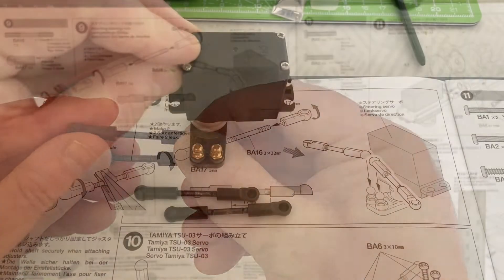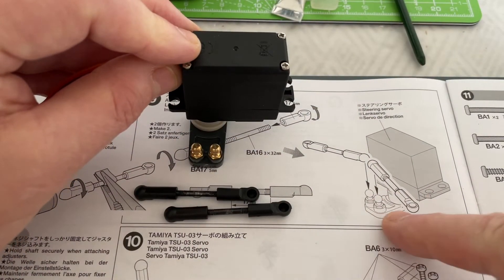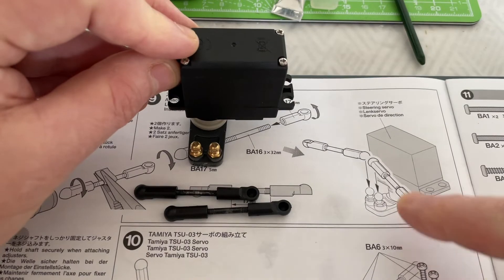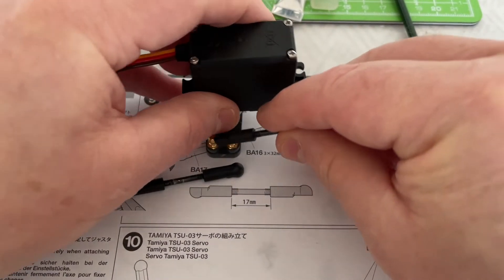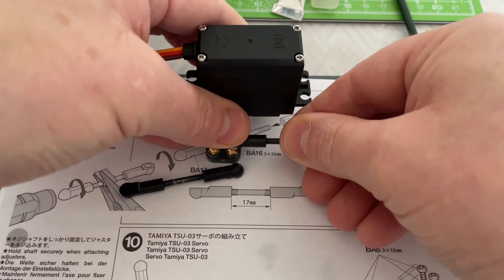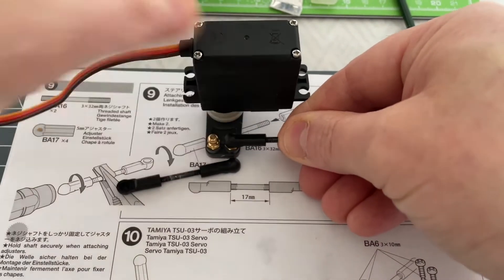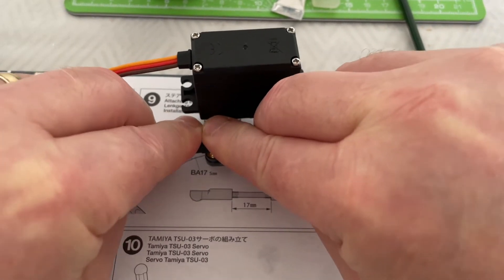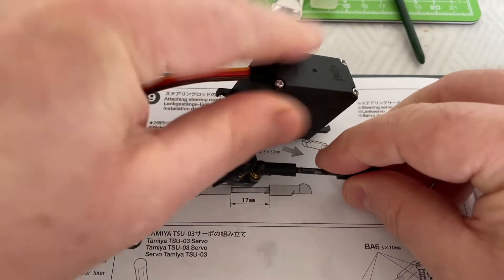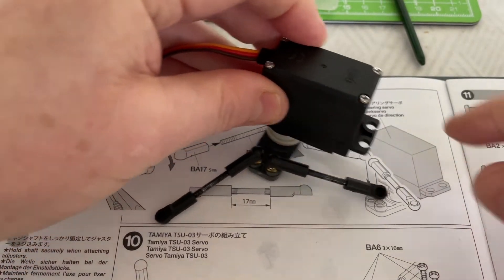The last little step for step 9 is we've got to put our steering linkages on. We've got to pop these on - one and two. There we go. So now we have the steering linkages as per the diagram. We've completed step 9. We now need to move on to step 10.